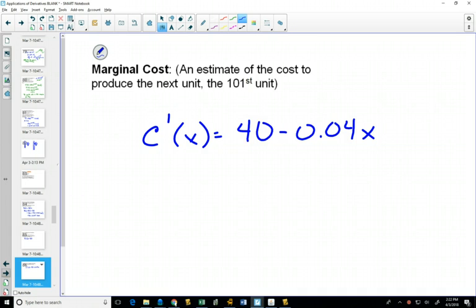And so if we want to figure out what is the marginal cost at 100, plugging in 100 here, 100 times 0.04 will be 4, 40 minus 4. So the 101st unit that you produce is only going to cost you $36.